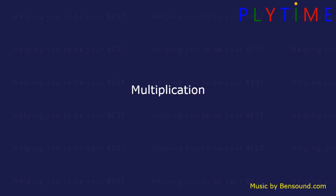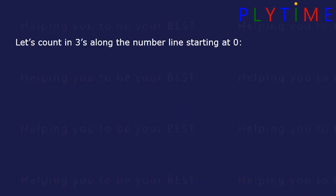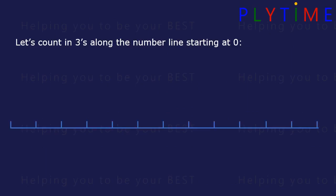Multiplication: the three times table. Let's count in threes along the number line starting at zero. We skip two numbers each time.